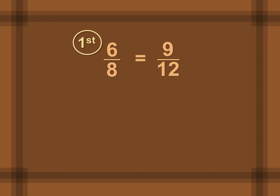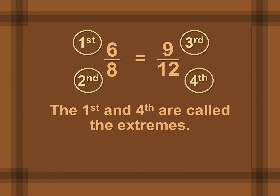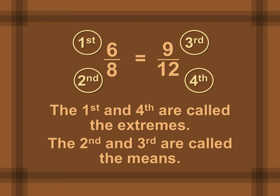Before we talk about those properties, the order of these numbers is very important. Reading left to right: the first number is 6, the second number is the denominator of the first ratio, the third number is the numerator of the second ratio, and the fourth number is the denominator of the second ratio. The first and fourth numbers are called the extremes — they're either first or last. The second and third numbers are in the middle, and we call those the means.